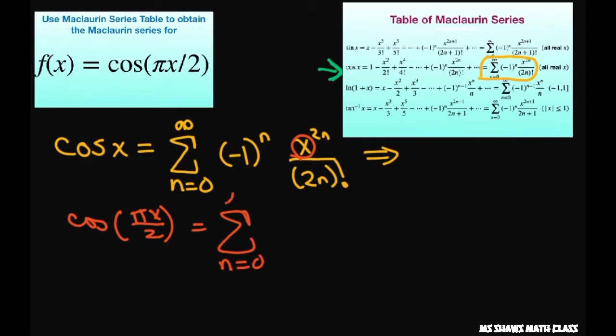n equals 0 to infinity of negative 1 to the power of n. And then for this x, we're going to get pi x divided by 2 to the power of 2n divided by 2n factorial.